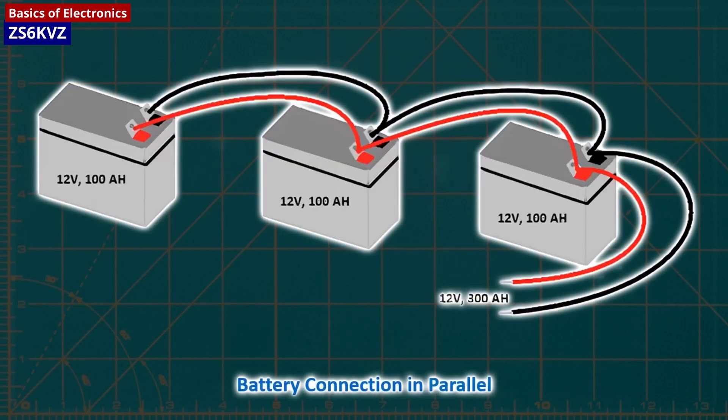Placing batteries in parallel keeps the voltage the same, but the amount of current available doubles.